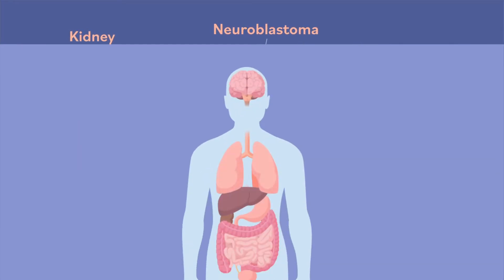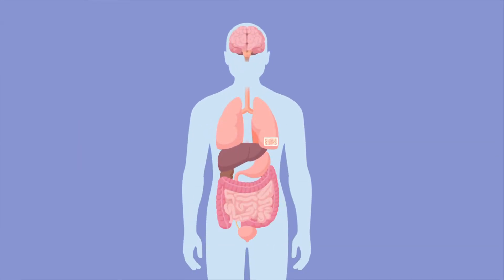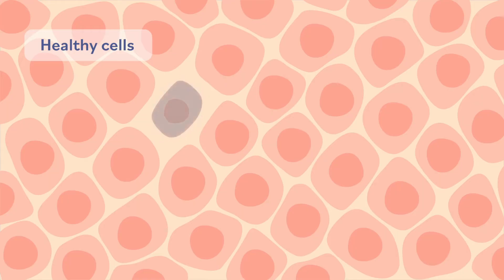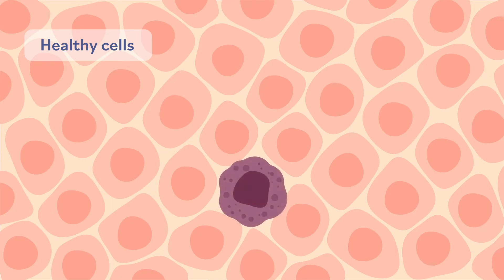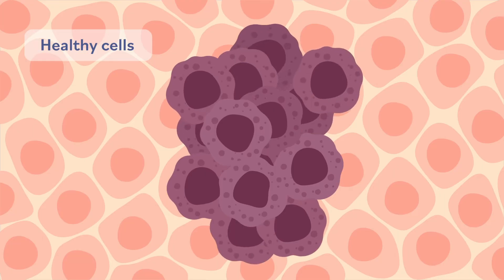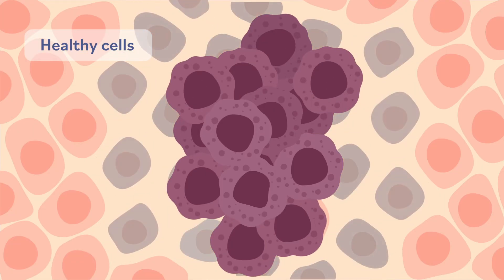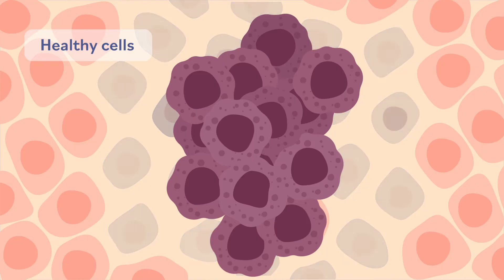Each organ in your body is made up of many, many cells. Normal healthy cells divide and grow only when they are needed. When they are old or damaged, they die and new healthy cells take their place. Cancer happens when changes in one cell cause it to divide and grow out of control and not to die. These overgrown cells damage the healthy cells around them and cause the healthy cells to die.